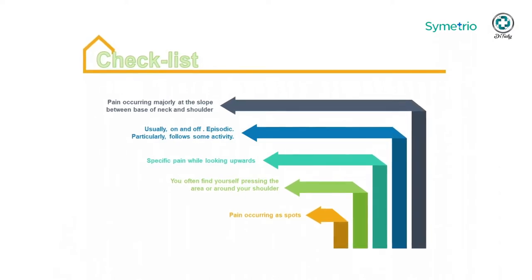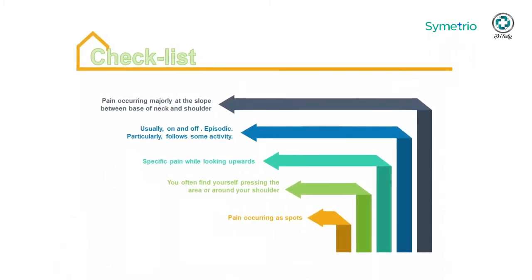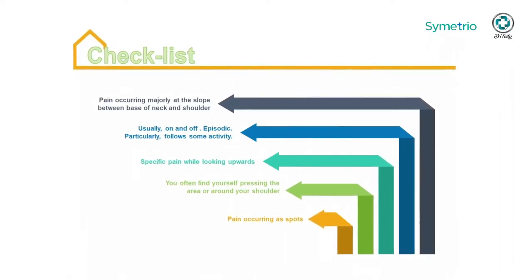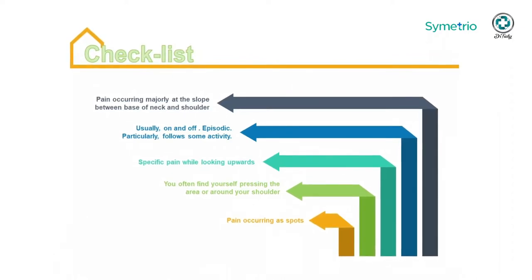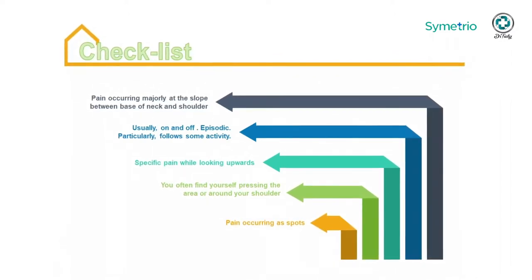Don't get confused or alarmed — I will help you identify if you are going into this condition. There are a few checklist points to keep in mind. First, the pain of trapeziitis occurs as an on-and-off or episodic pain — it is never constant. It usually follows a pattern and occurs after a strenuous or tiring activity, for example, holding your hand above your head for longer durations, typing in front of your laptop for long periods, or writing continuously throughout the day.